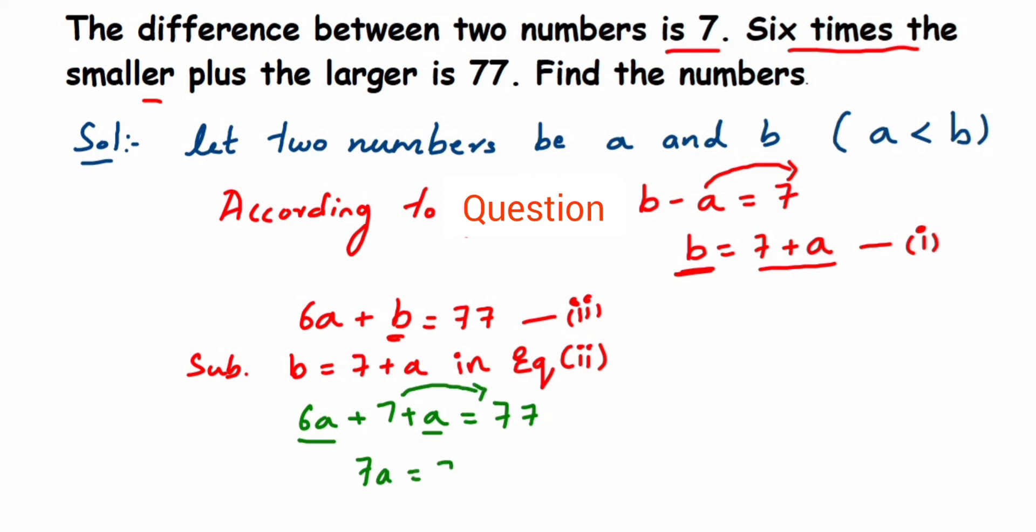Now 77 minus 7 is 70. So from here we can write down 7a is equal to 70, which implies a will be equal to 70 divided by 7. We can cancel, and we'll get a is equal to 10. Therefore, a is equal to 10. We got the smaller number, which is equal to 10.